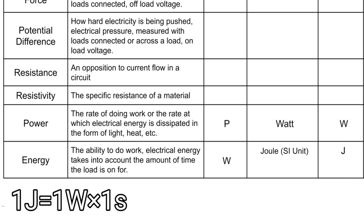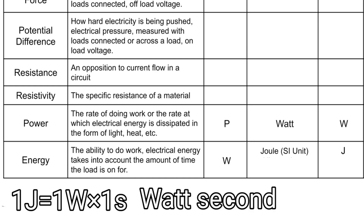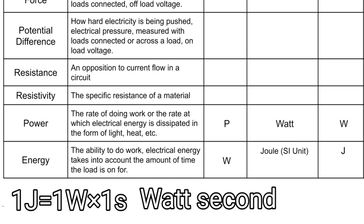One joule of energy is the same as one watt of power being used for a period of one second. So one watt of power used for one second gives us one joule. We could actually call this SI unit of energy the watt-second, but instead we give it the special name: the joule.